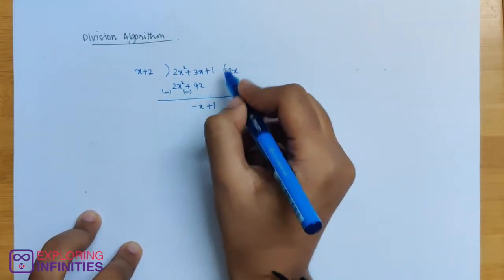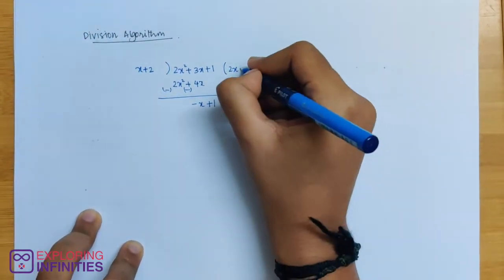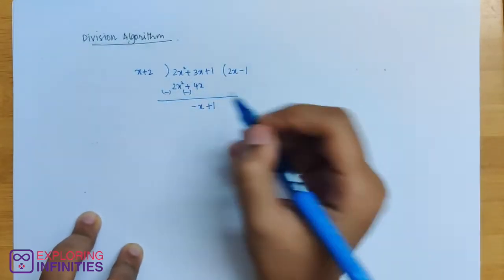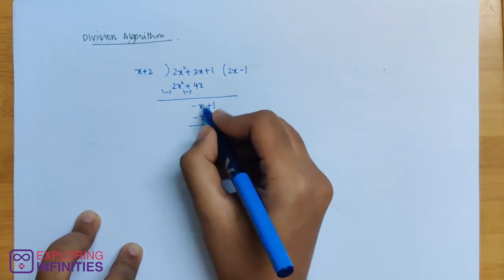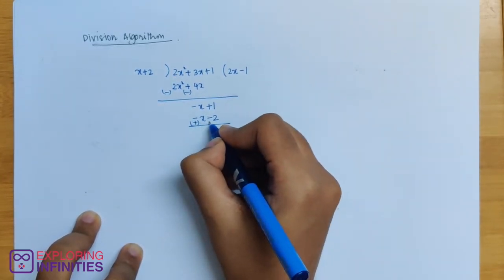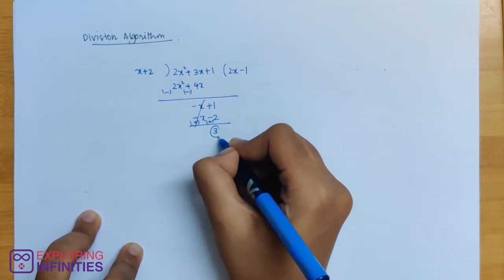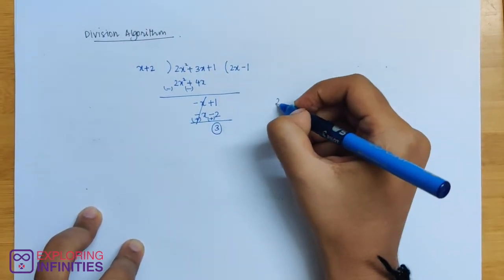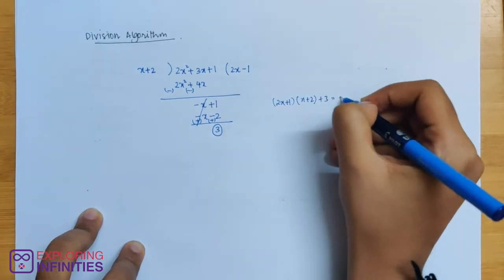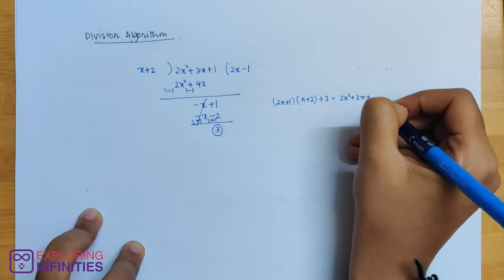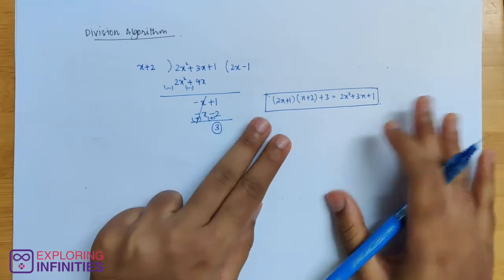Now divide minus x by x to get minus 1. Multiply minus 1 by x plus 2: minus x minus 2. Subtract, and the remainder is 3. So 2x plus 1 into x plus 2 plus 3 is equal to 2x square plus 3x plus 1. This is the division algorithm.